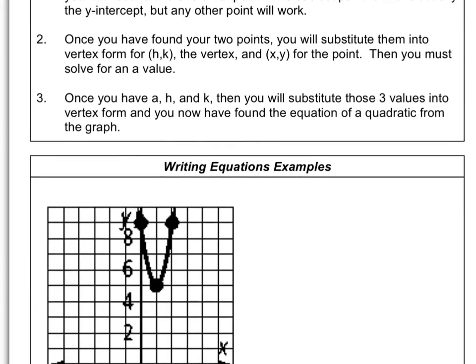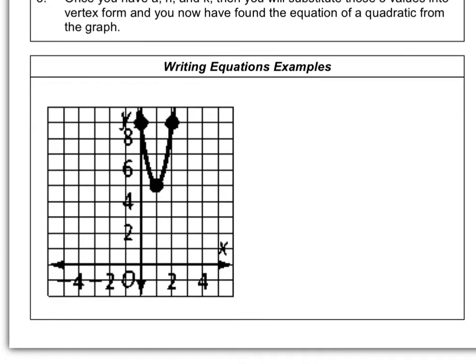Let's take a look at an example. Starting here, let's identify some points. First, we've got to identify the vertex. The vertex in this case is at the ordered pair (1, 5). Then you notice you have two other points — you can pick and choose whichever one you want. As you see on the graph, we have the y-intercept. Anytime we can use a y-intercept, we want to use that because it has the number 0. So the y-intercept in this case is the ordered pair (0, 9).